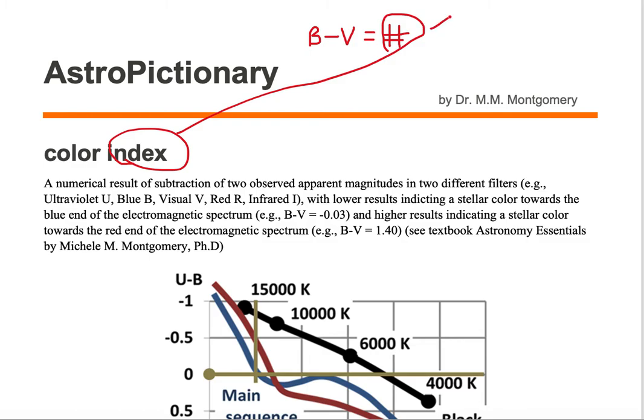Now if this value or index you obtained is low, then your object is going to look more towards the blue end of the electromagnetic spectrum. However, if your subtraction value is high, let's say more towards two, then your stellar object is going to look more towards the red end.